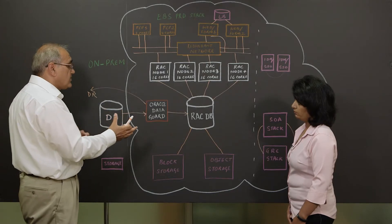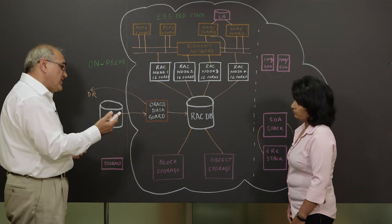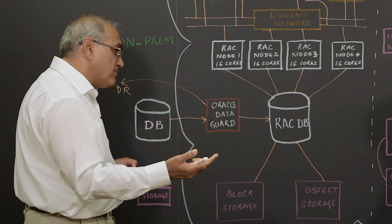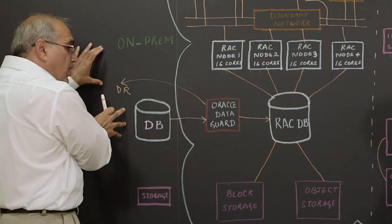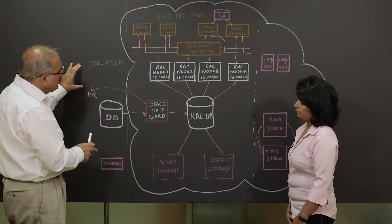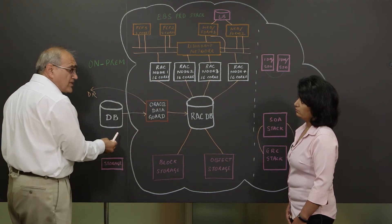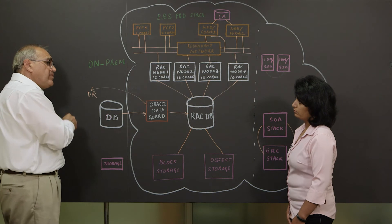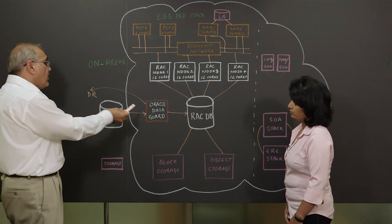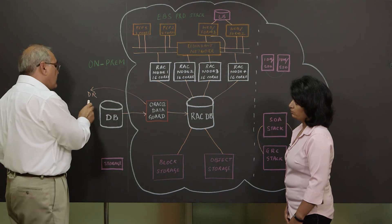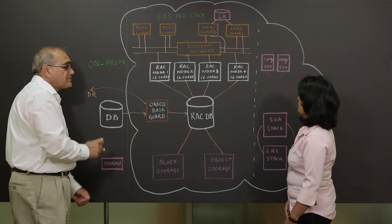So we moved this Oracle Data Guard to on-prem and we used this to continuously get updates from the production system. And out of that, we would build or clone our supporting instances. And we also used this Oracle Data Guard for disaster recovery here. So our disaster recovery system was on-prem.